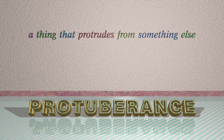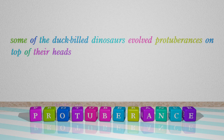Number 6: Protuberance — which means a thing that protrudes from something else. For example: Some of the duck-billed dinosaurs evolved protuberances on top of their heads.